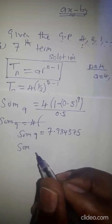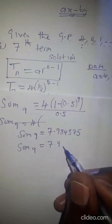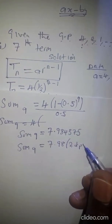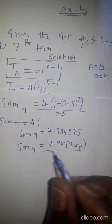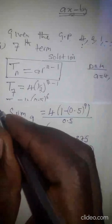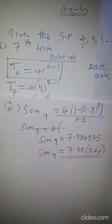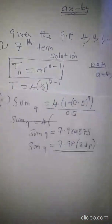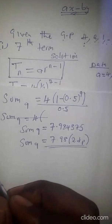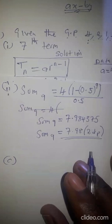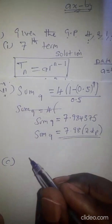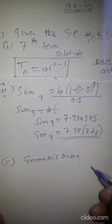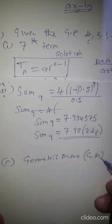That is the solution for Part B(ii) of Question 1. The last part is Part C, which is asking us to find the geometric mean.